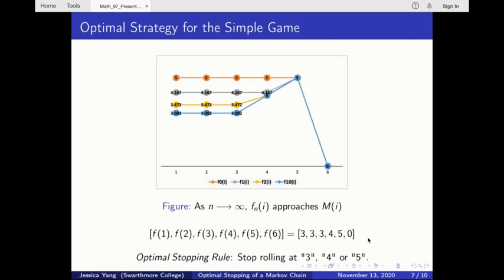Return to our simple game example. We want to find a strategy that optimizes our reward. And to compute our maximum expected value function, we can define f sub 0 to be 0 at state 6 and to be 5 at any other state. We then successively compute f sub 1, f sub 2, etc. using the definition from the last slide.